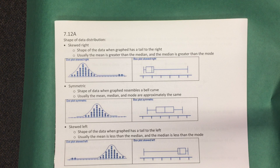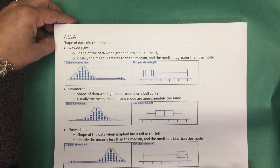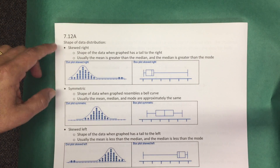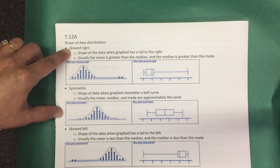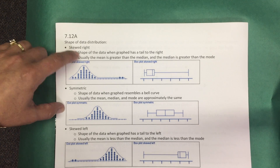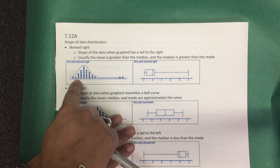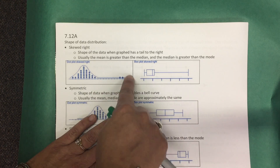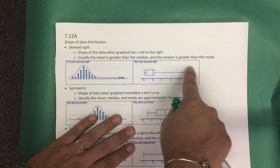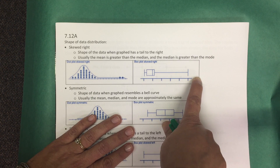Let's talk about the shape of distributions of these graphical representations. The shape can sometimes be referred to as skewed right, which means the shape of the data when graphed has a tail to the right. Looking at this dot plot and this box plot, they both have a tail to the right, meaning this data distribution is skewed right.